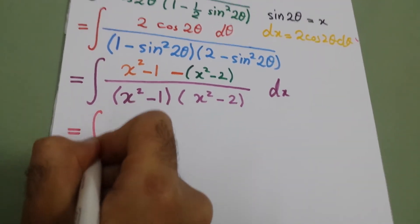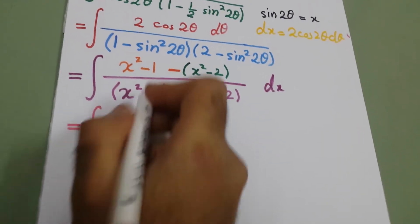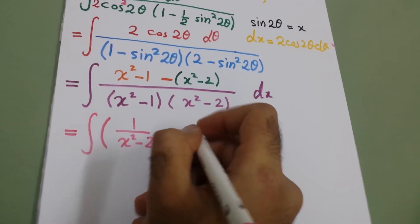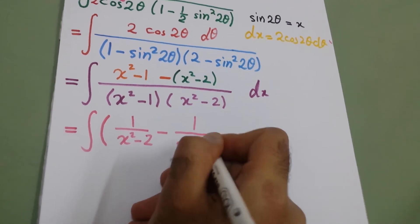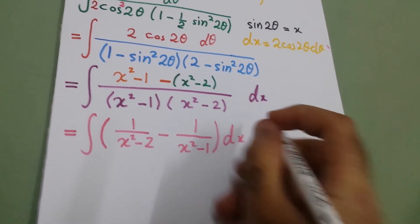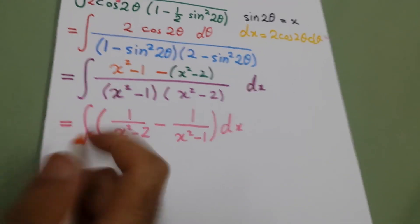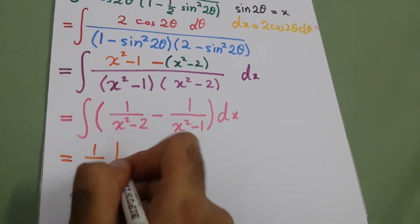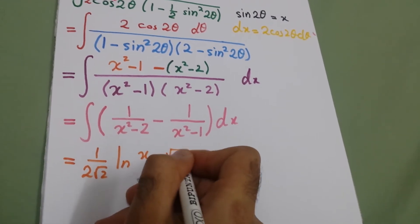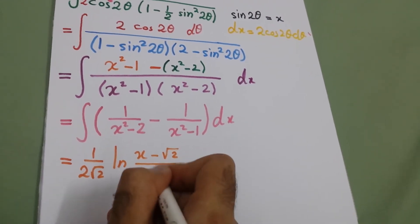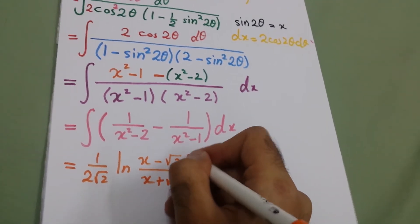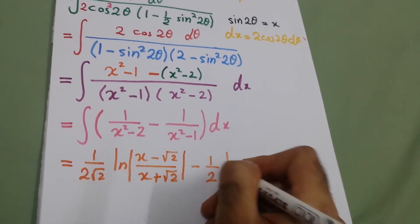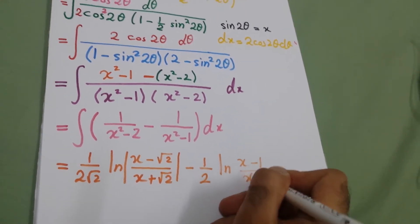After dividing, one term cancels and we are left with the integral of 1 over x squared minus 2, minus 1 over x squared minus 1, dx. This integrates to 1 over 2√2 times ln of |x minus √2 over x plus √2|, minus 1 over 2 times ln of |x minus 1 over x plus 1|, plus constant.